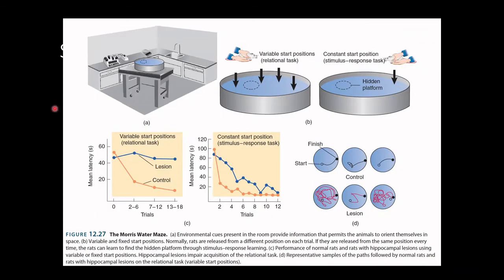If animals are started from variable positions, this becomes a relational task where they use information about environmental cues to form a cognitive map — knowing where they are in space and navigating to a point based on how they relate to that location. However, if given a constant start position, they can instead learn a stimulus-response task, knowing that when placed into this environment they must perform the same response — swim in the same direction to find the platform. Initially they may approach even a fixed-start task relationally using the hippocampus, but after enough trials they'll begin performing it as a stimulus-response task.